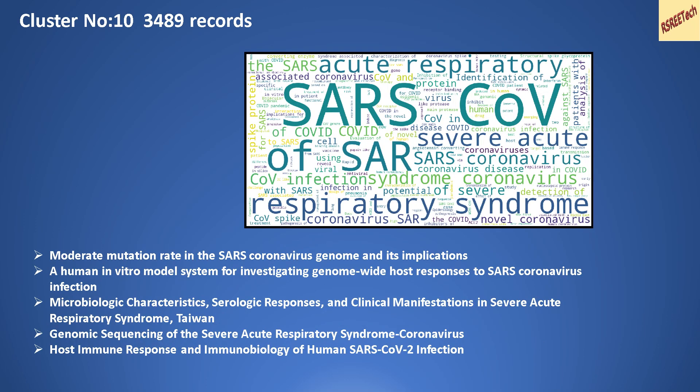Cluster number 10 has close to 3,500 records. The word cloud showed common words like 'SARS-CoV', but also 'protein' and 'spike protein', suggesting content related to the genetic structure of coronavirus. Looking at the titles, I found papers on genomic sequencing of SARS coronavirus, microbiological characteristics, serological responses, and clinical manifestations in SARS. This cluster mostly talks about the genetic structure and implications of coronavirus.